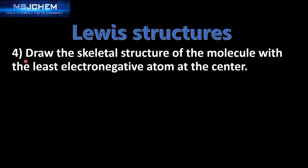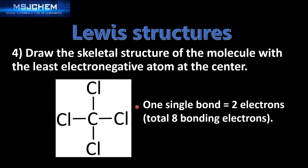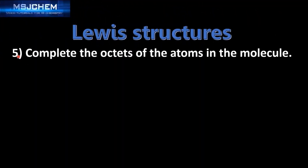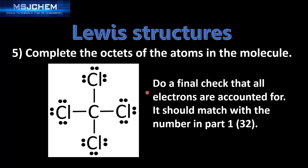Next we draw the skeletal structure with the least electronegative atom — carbon — at the center, then draw single covalent bonds to the 4 chlorine atoms. One single covalent bond equals 2 electrons, giving a total of 8 bonding electrons. We then complete the octets of all atoms: each chlorine gets 8 valence electrons, and carbon in the center also has 8. Finally, we verify all electrons are accounted for — 4 groups of 8 equals 32, matching our earlier calculation.